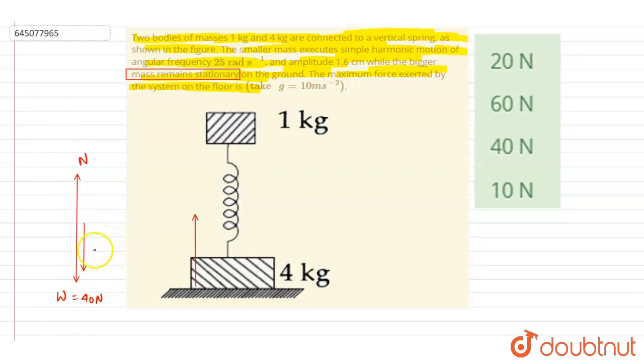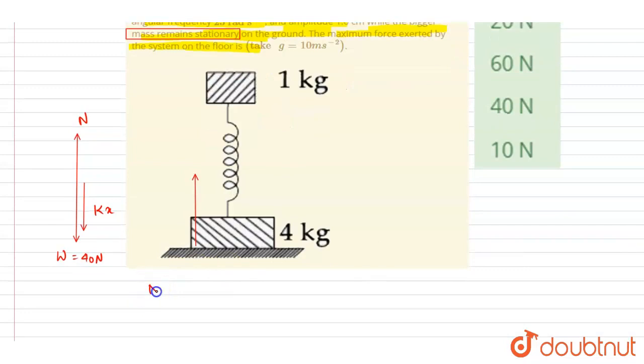So it will be kx. So we can write down the normal reaction by the ground on this block. It will be W plus kx. So normal reaction will be maximum when this kx force will be maximum, right?